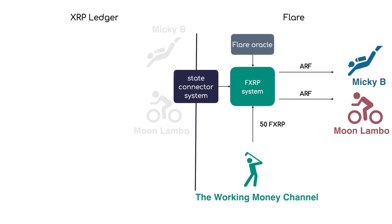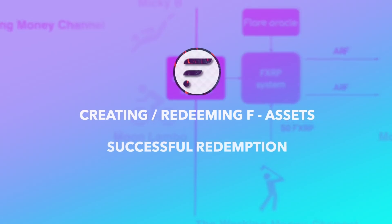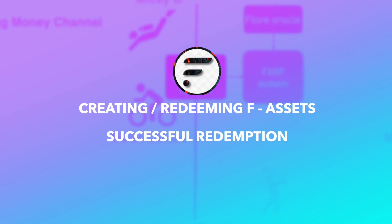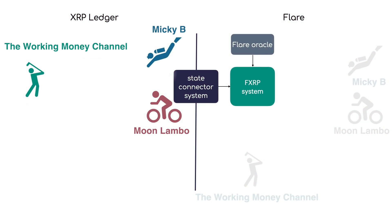Now let us look at two different scenarios, starting with a successful redemption. The agent sends the Working Money channel 50 XRP by the ledger index number specified in the agent redemption formula. This transaction is then observed by the FXRP system through the state connector system, which unlocks the Spark they used as collateral. This assumes the agents have the XRP to be redeemed.